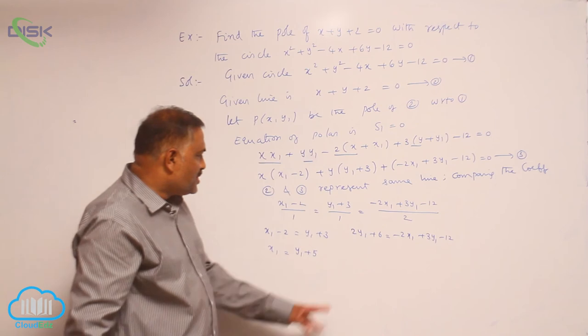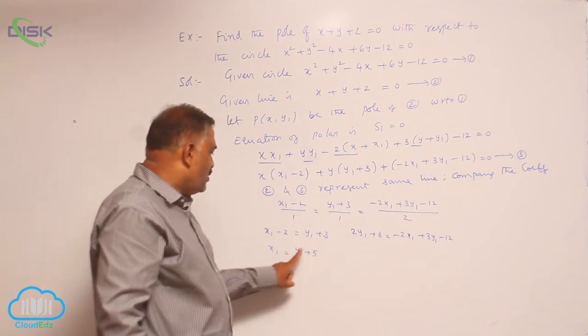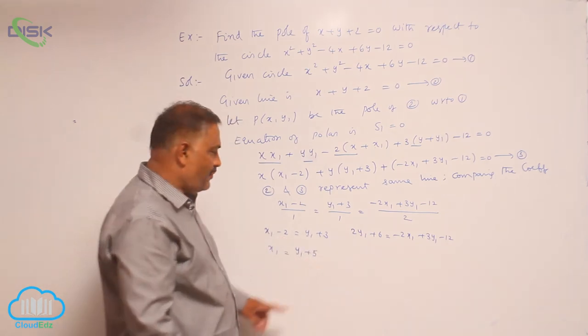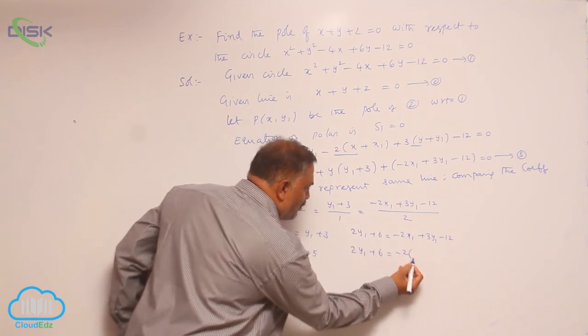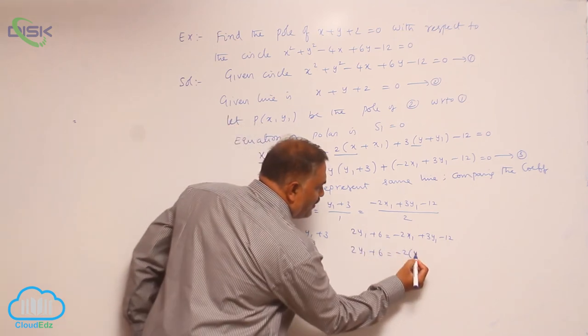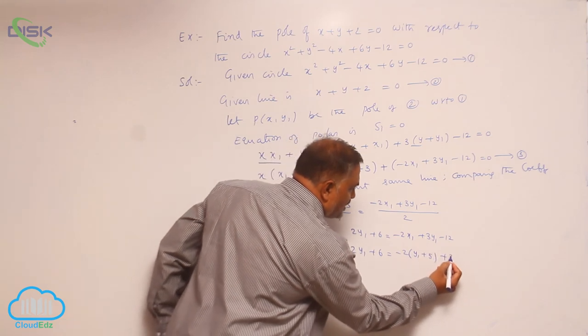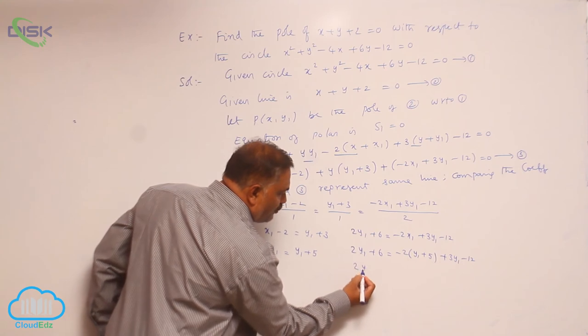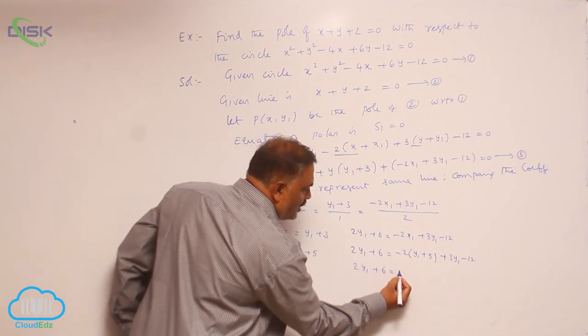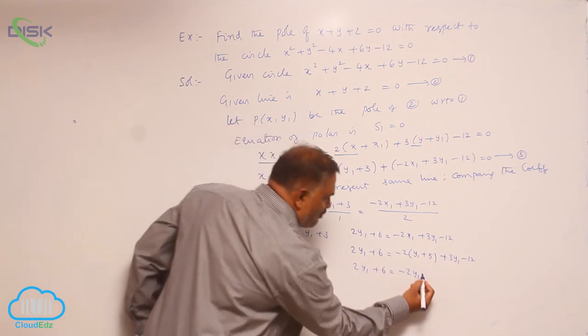Now observe, in place of x1 you can write y1 + 5, so 2y1 + 6 = -2(y1 + 5) + 3y1 - 12. Simplification: 2y1 + 6 = -2y1 - 10 + 3y1 - 12.